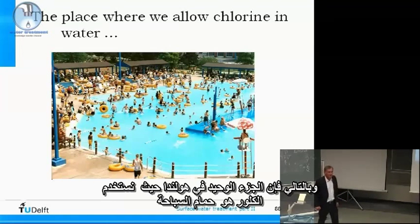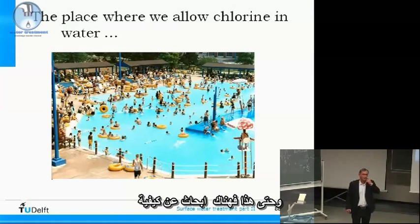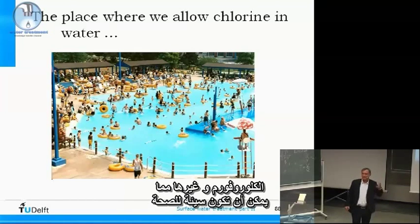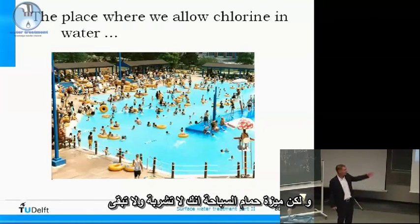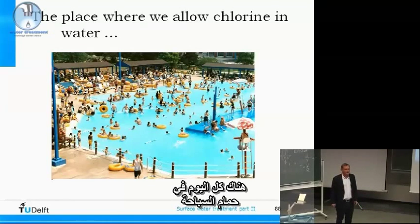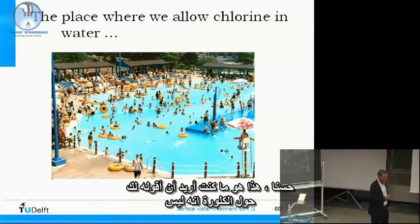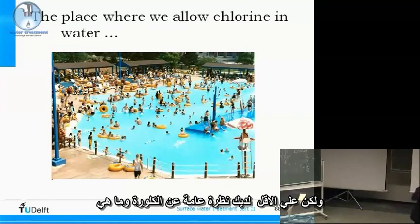The only place in the Netherlands where we still use chlorine is in swimming pools. Even there, research is being done on how to diminish the amount of chlorine, because chloroform and other compounds in the water can be slightly bad for health. The advantage of a swimming pool is that you are not drinking the water and you are not in it all day. This concludes the global overview of what chlorination is about.